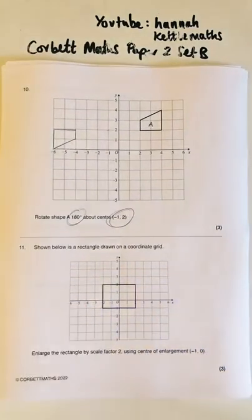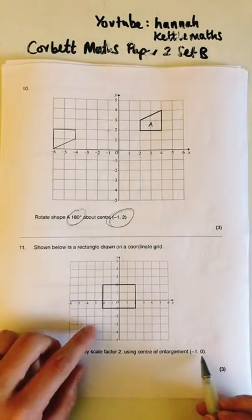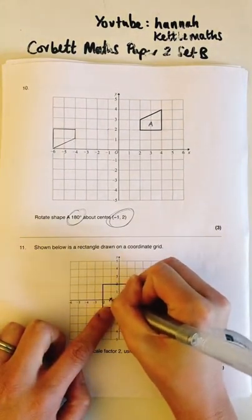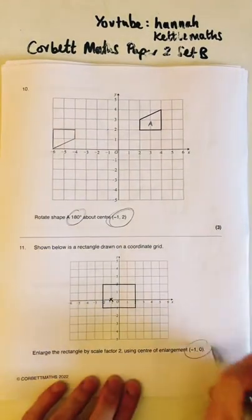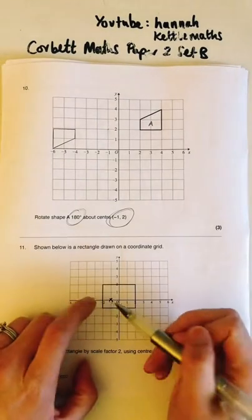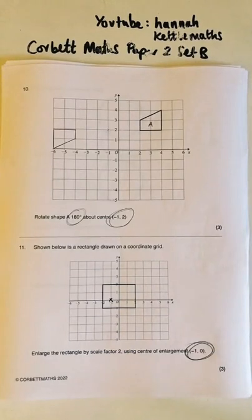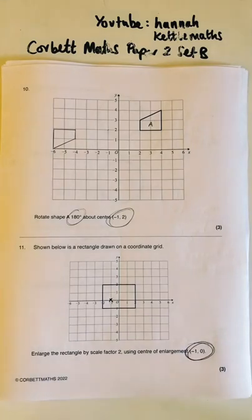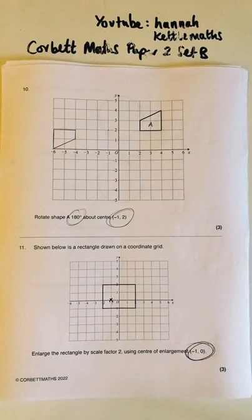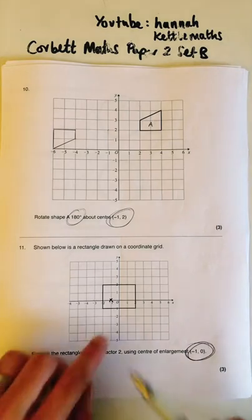Question 11: enlarge shape A by scale factor two using centre of enlargement minus one, zero. This is quite challenging so I'll go slowly. The centre minus one, zero is what we make it bigger from — you can't just draw it anywhere. If you get stuck, at least draw it two times bigger anywhere to get partial marks.